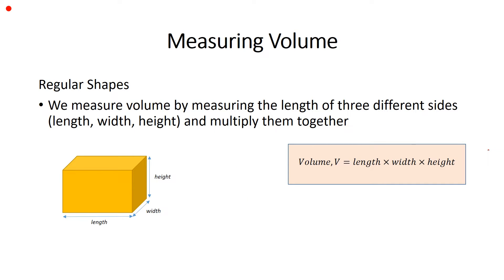Next, measuring volume. There are two approaches in measuring volume, depending on whether the shape is regular or not. For regular shapes, in this case a cuboid, we measure the volume by measuring the length of 3 different sides: the length, width, and height, and then we multiply them together. As you can see from this cuboid, this is the length, this is the width, and this is the height. The formula for the volume of this cuboid is length times width times height.